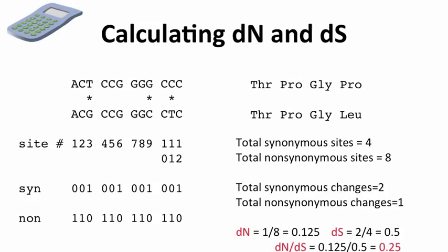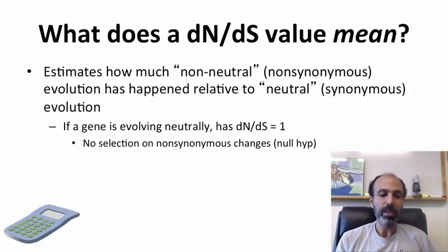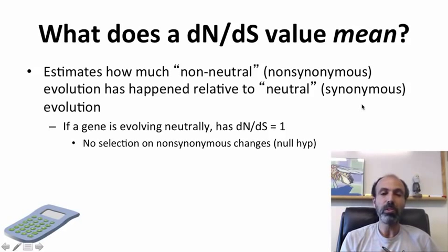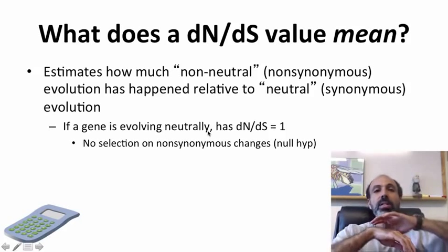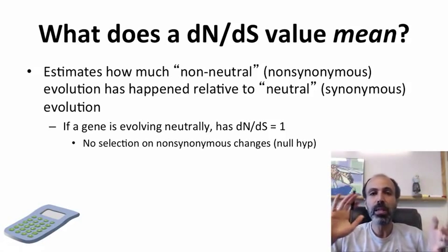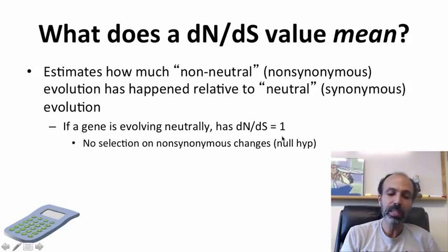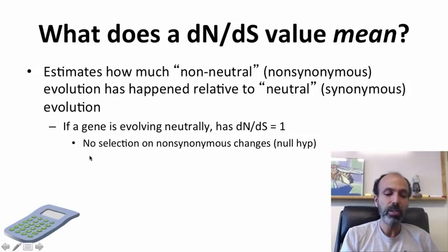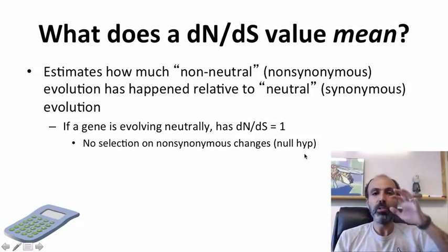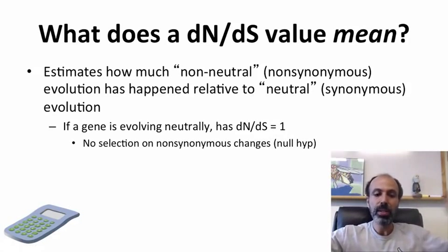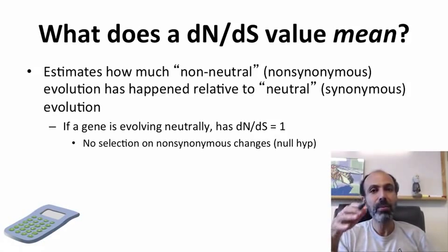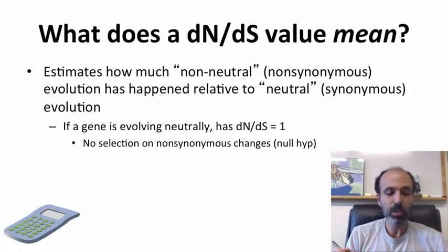What does a dN/dS value mean? It estimates how much non-synonymous evolution has happened relative to neutral or synonymous evolution. If a gene is evolving truly neutrally — if any difference was equally okay in terms of fitness — we expect a dN/dS value close to 1. That says there's no selection on non-synonymous changes, no bad, no good — they're just like the neutral ones. You would actually have more non-synonymous changes than synonymous changes, but since you have more non-synonymous sites, it factors that out.